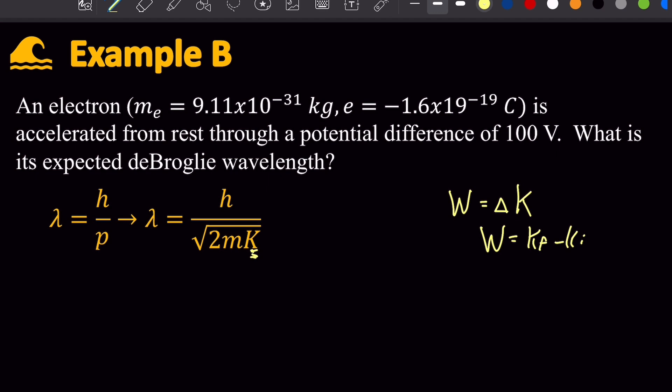And then for the voltage done on a charge, the work is simply the voltage applied to it times the charge, which in this case, e is the charge of an electron, which has a magnitude of the elementary charge.